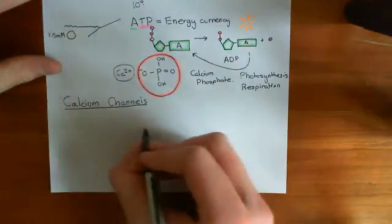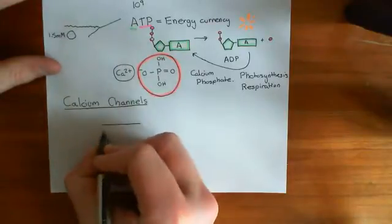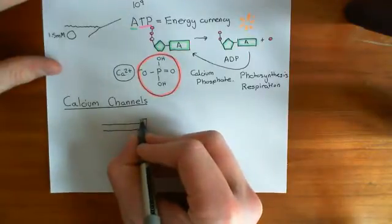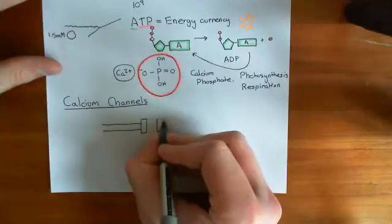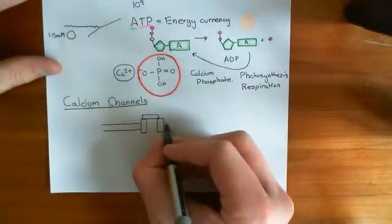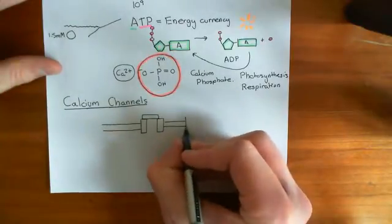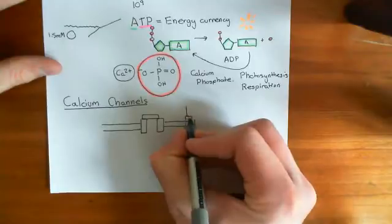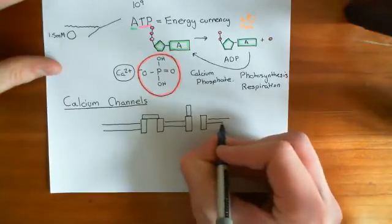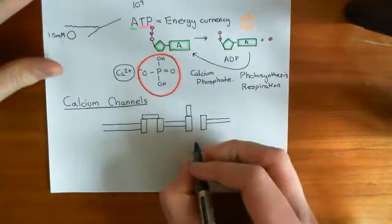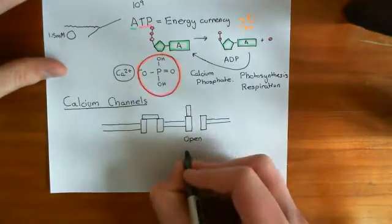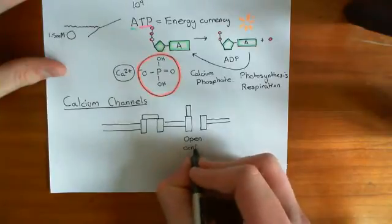It's a protein that sits in the cell membrane — let's draw the phospholipid bilayer here. Basically, it's a protein that generally has two conformations. It has a conformation where it is closed — the closed conformation — and it has a conformation where it is open — the open conformation. When it's in the open conformation, it's capable of allowing calcium ions to pass through it; it's capable of conducting calcium ions.